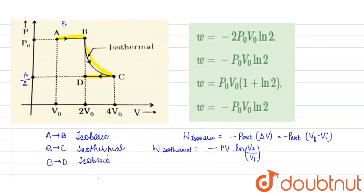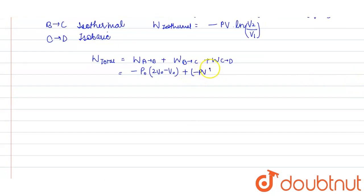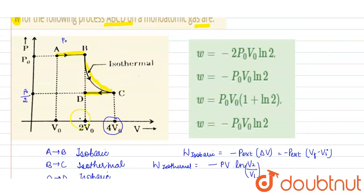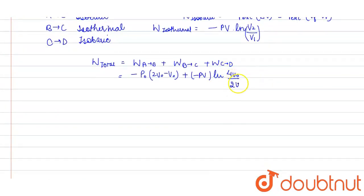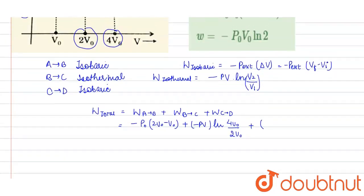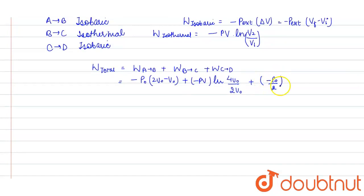From B to C the process is isothermal, so work done is minus pV times natural log of (final volume / initial volume). Final volume is 4V0 and initial volume is 2V0, since expansion is happening, giving 4V0 upon 2V0. For C to D, compression is happening — pressure is p0/2, final volume is 2V0, initial volume is 4V0. So work done is minus (p0/2) times (2V0 minus 4V0).